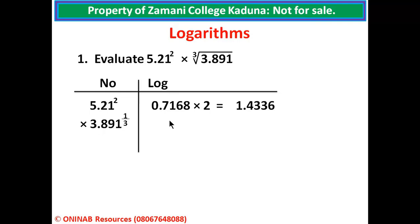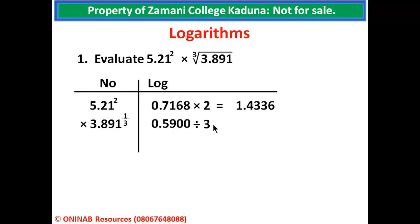For 3.891, the logarithm also has two parts. The integer part is the power of 10 when expressed in standard form, which is 0. Going to the logarithm tables, find 38 under 9 with differences of 1 — that gives 0.5900. Because of the fractional index 1 over 3, we divide 0.5900 by 3, giving 0.19666, which to 4 decimal places is 0.1967.